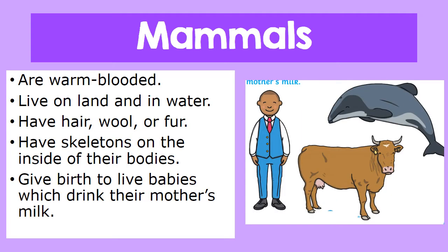The second group of vertebrates are the mammals. Mammals are warm-blooded. They live on land and water. They have hair, wool, or fur that covers their body. They have a skeletal system on the inside of their bodies. They give birth to live babies which drink their mother's milk.